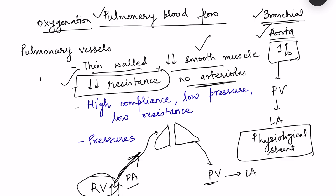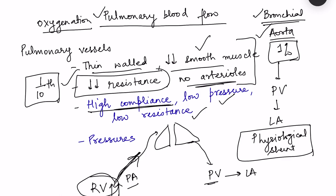The resistance in pulmonary vessels is only one-tenth of the systemic circulation. Due to these anatomical characteristics, these vessels are low-pressure, low-resistance, and high-compliance vessels — meaning they can accommodate blood without much increase in pulmonary arterial pressure.